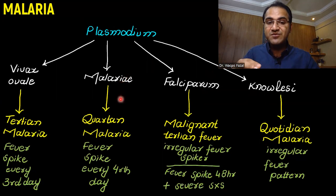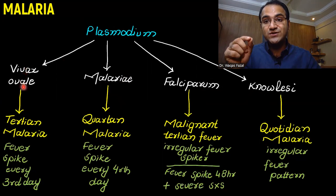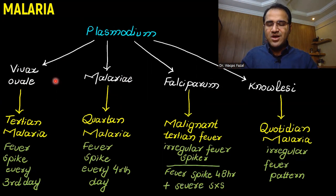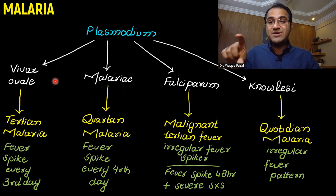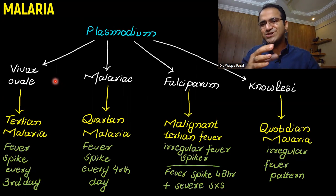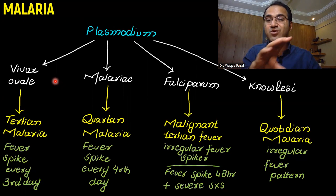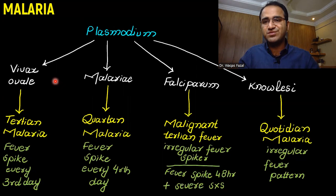Plasmodium malariae has quartan fever — fever on the fourth day — and plasmodium vivax and ovale cause tertian fever on the third day. However, finding this classical fever pattern in patients with malaria is very rare. Usually patients do not present with this specific fever pattern; the fever is very irregular in the patients we see in the hospital.